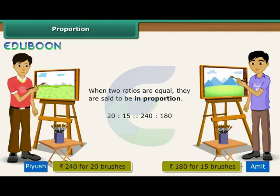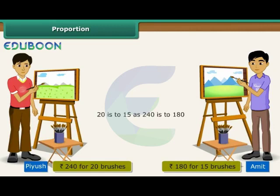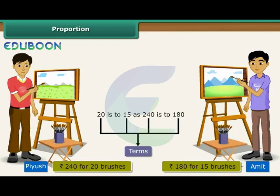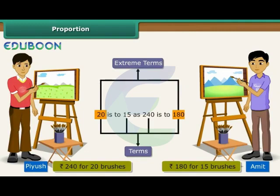Ratios in proportion are read as 20 is to 15 as 240 is to 180. Each number used in a proportion is called a term. 20, 15, 240, and 180 are terms. The first and the last terms are called the extreme terms. The second and the third terms are called the middle terms.